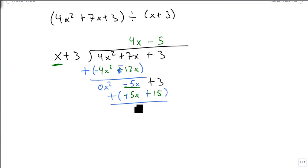Giving us 0x, which we can then ignore, and a positive 18.